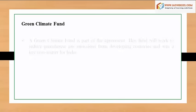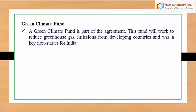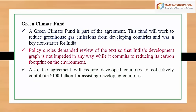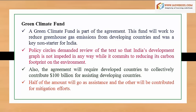The Green Climate Fund is a key part of the agreement, designed to help reduce greenhouse gas emissions from developing countries. It was a key sticking point for India, whose policy circles demanded a review of the text to ensure India's development trajectory would not be impeded while committing to reducing its carbon footprint. The agreement requires developed countries to collectively contribute 100 billion dollars to assist developing countries — half as direct assistance and the other half for mitigation efforts.